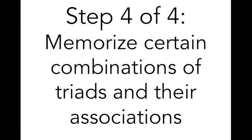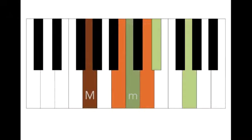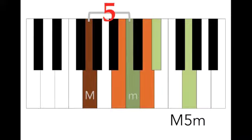The only step that's left really is to memorize certain combinations of triads and their associations. We've got a major V to minor here but there are loads of other combinations that we could have.